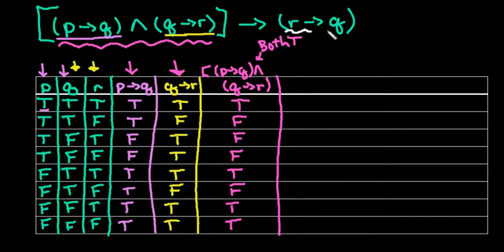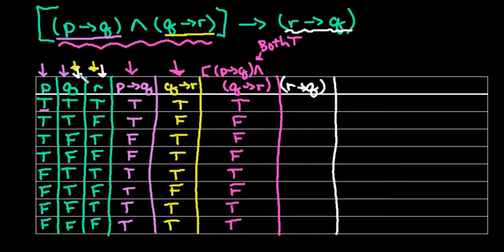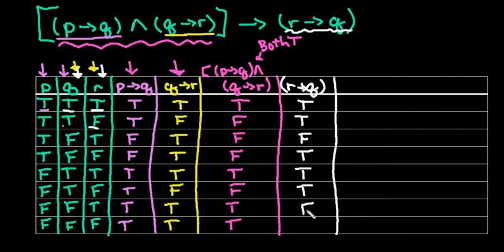Now we need the R then Q column. We look at R first, then Q. True-true is true, false-true is true, true-false is false — that's where it's false. False-false is true, true-true is true, false-true is true, true-false is false, and false-false is true. The only time it's false is the pattern true then false.